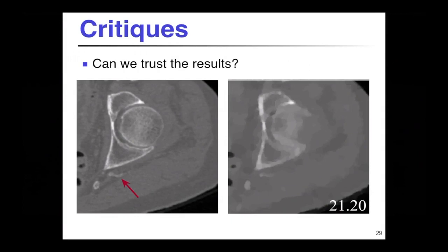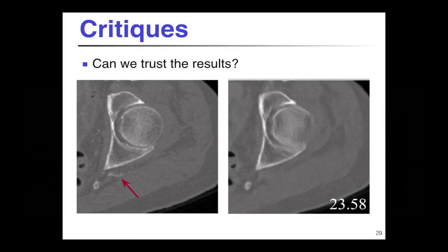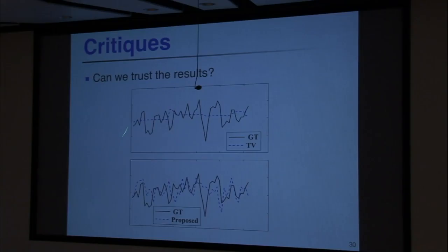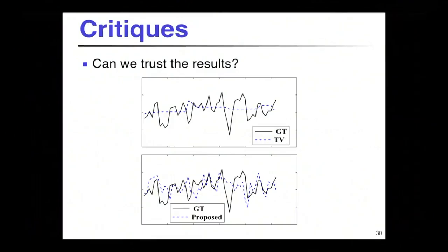Here's some of our own data to illustrate concerns. Here's a full-view reconstruction of some bone with a little spur. Here's a total variation reconstruction — it has nice staircasing, is a little over-smooth but you still see the bone — at 21 dB SNR. Here's the neural network at 23 dB, but the bone is gone. SNR might not be the right metric. Here's another version: profiles from an image, ground truth is the wiggly thing, TV smooths it. The neural network looks very sharp with lots of high frequencies, but they are different high frequencies than the ground truth.